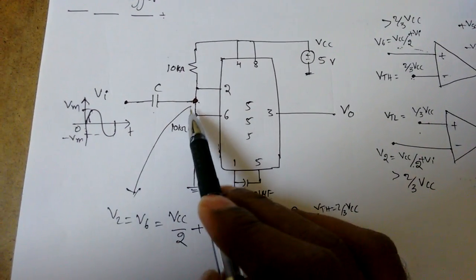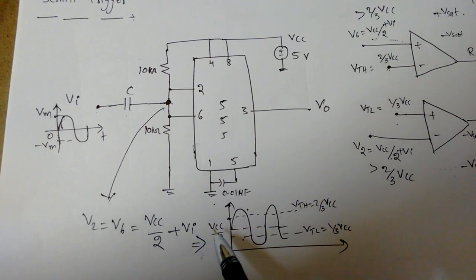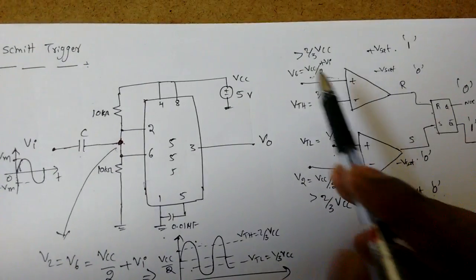That is whenever this voltage, when you are upon application of sinusoidal signal, whenever this V2 or V6 is greater than 2 by 3 VCC, the output will become low.